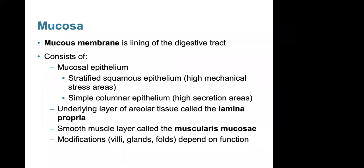The mucosa is our mucous membrane lining the digestive tract. It consists of mucosal epithelium composed of stratified squamous epithelium in high mechanical stress areas, and simple columnar epithelium in areas of high secretion — so the epithelium type changes. There is also an underlying layer of areolar tissue called the lamina propria, a smooth muscle layer called the muscularis mucosa, and various modifications such as villi, glands, and folds depending on function.